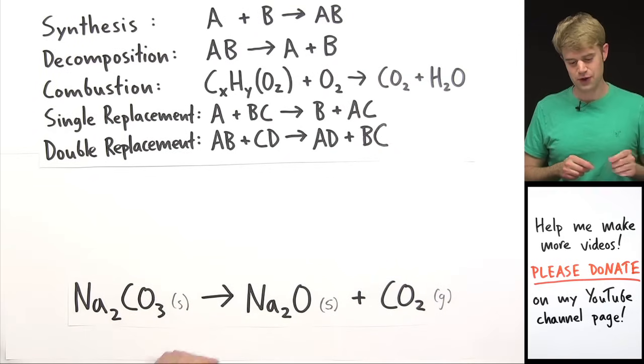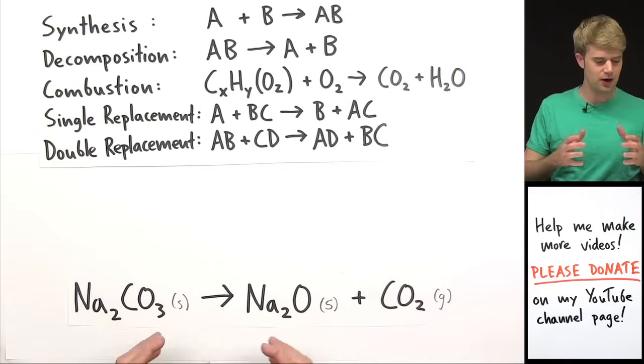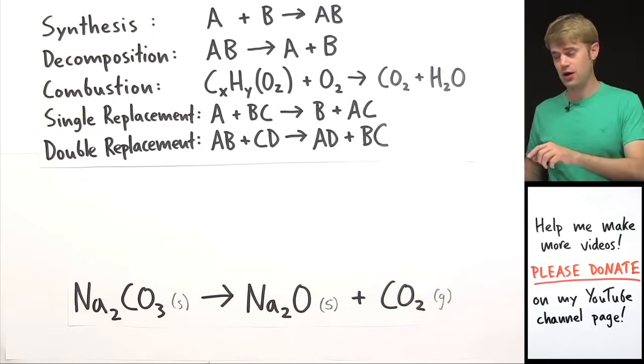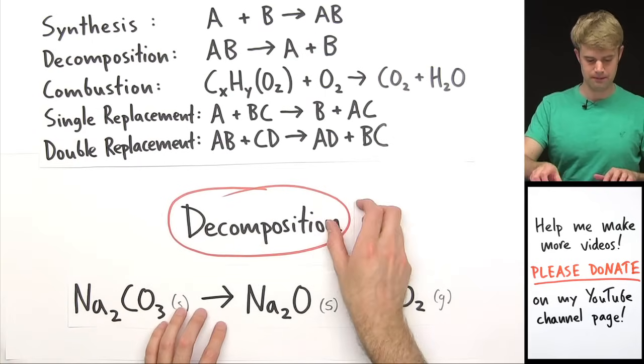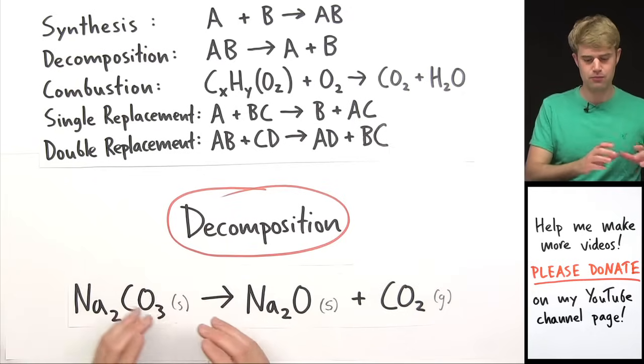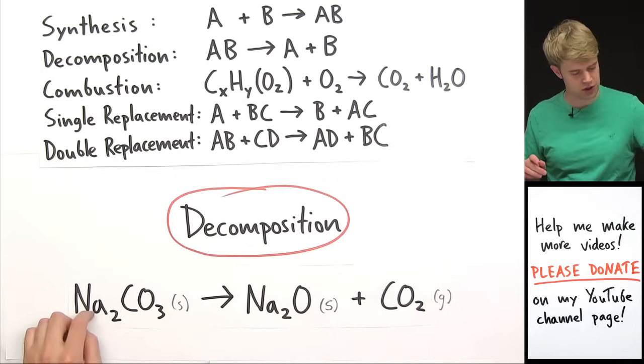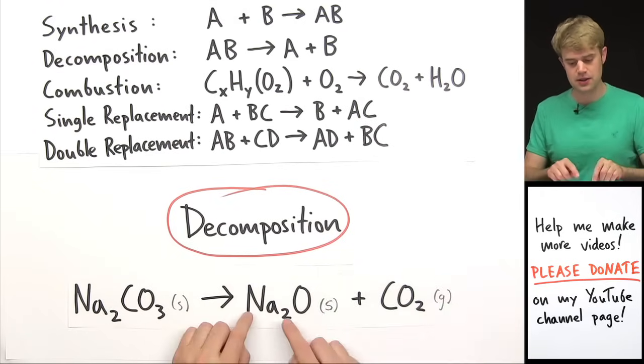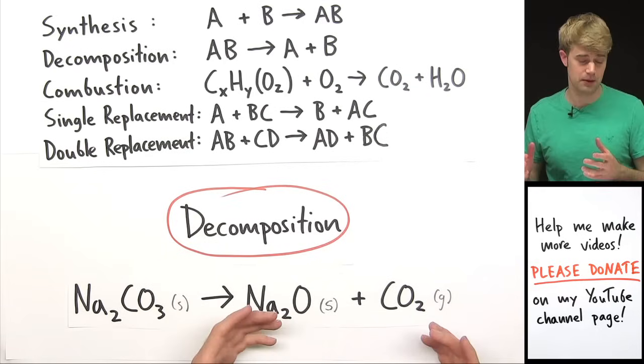Sodium carbonate turns into sodium oxide and carbon dioxide. So here we have a compound breaking down into simpler compounds. This is what happens in a decomposition reaction. Now, in this decomposition reaction, we don't see this compound breaking all the way down to the elements that make it up. We're not getting just sodium, carbon, and oxygen. But it's breaking down into simpler compounds that themselves are still combinations of more than one element. But that's okay. It's still a decomposition reaction just as long as we have something complex breaking into simpler pieces.